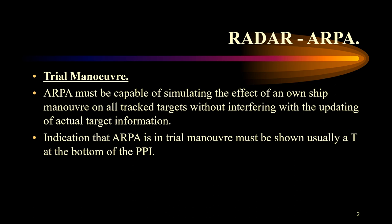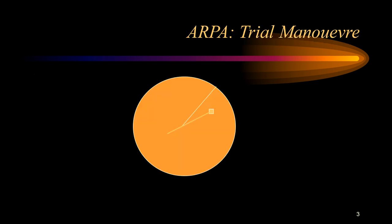Simply put, the trial maneuver allows you to run a scenario where you may take an action and see how that action will play out with respect to avoiding collision with other ships. You are not actually taking that action — you are just conducting a trial, and that's where the term 'trial maneuver' comes from. The heading marker may be displaced if trialing a course alteration.